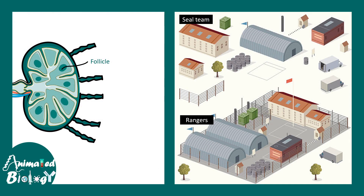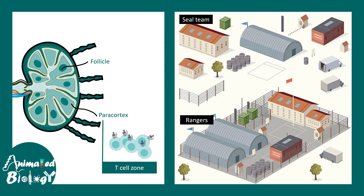To simplify, imagine the lymph node is a temporary army base camp. The army resides there in different barracks — rangers in one barrack and seal teams in another. Exactly like this, in the lymph node there are dedicated regions for T cells and B cells: the paracortex is the T cell barracks and the follicle is the B cell zone.